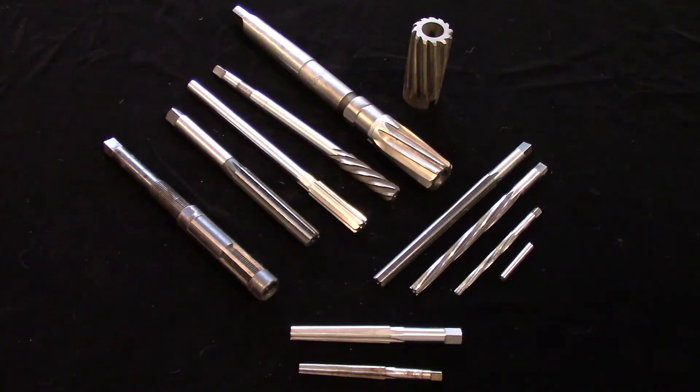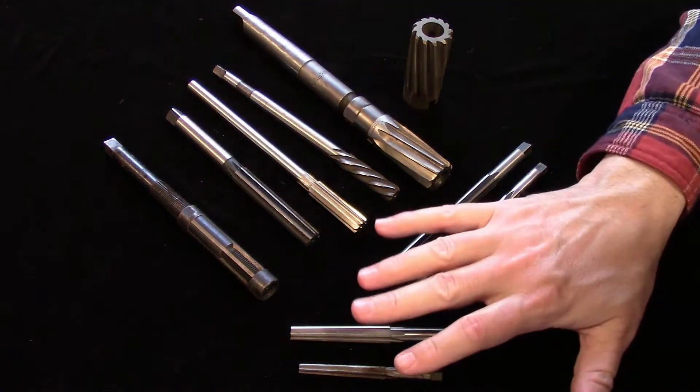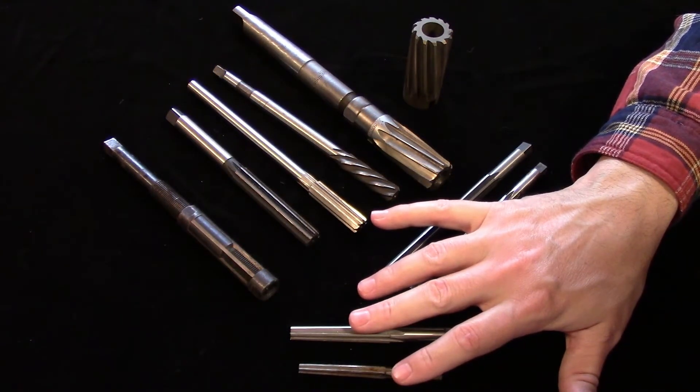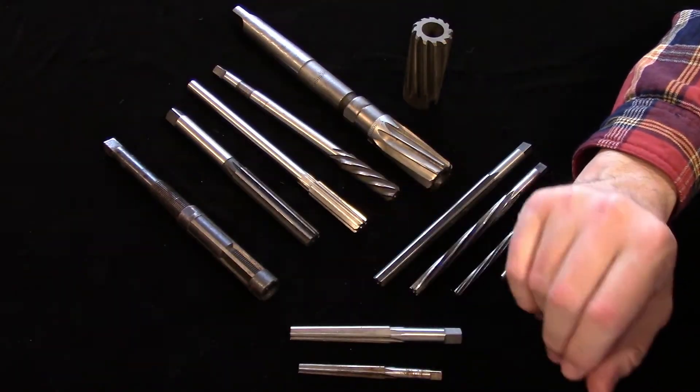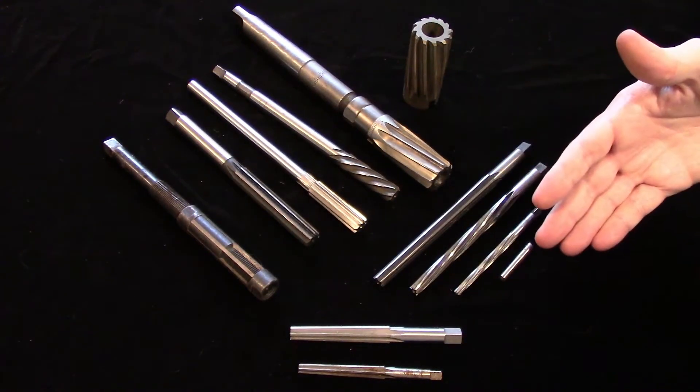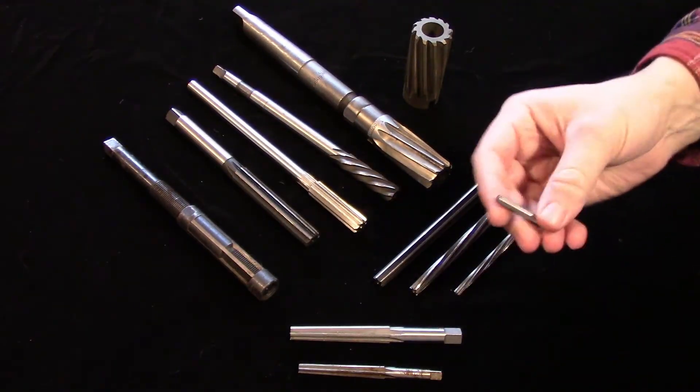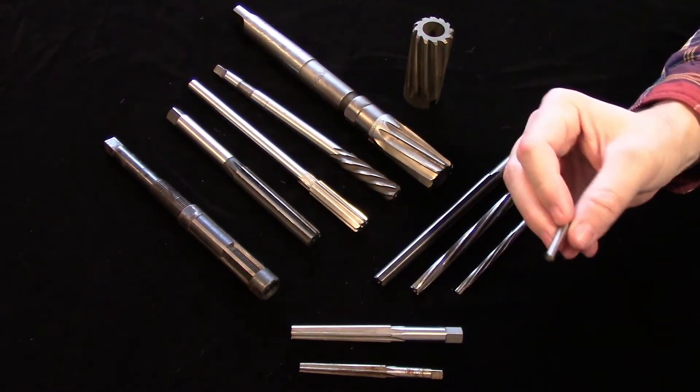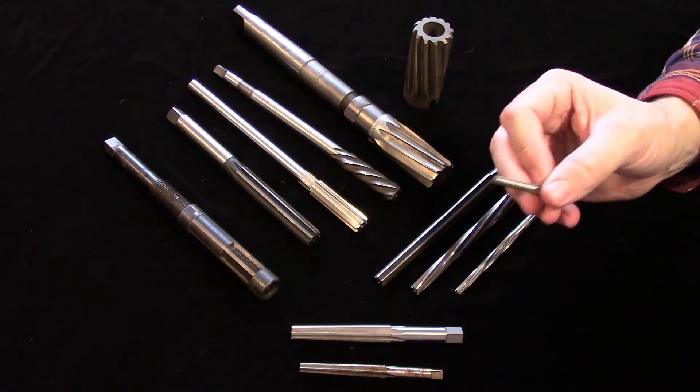There are also some special purpose reamers that deserve to be mentioned. Morse taper reamers are available to either cut or clean up morse taper sockets. Taper pin reamers are for cutting a seat for tapered dowel pins. These pins are used in all kinds of machinery to accurately locate removable parts.